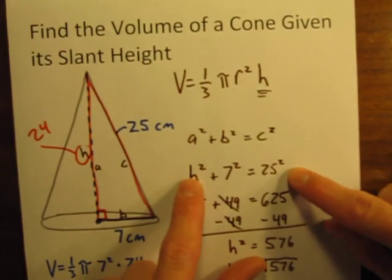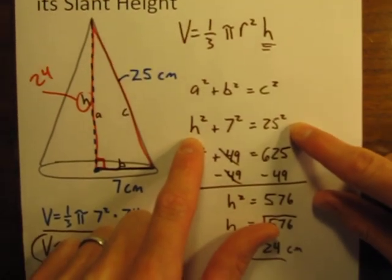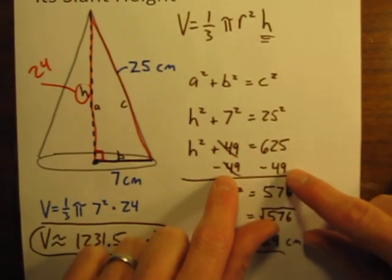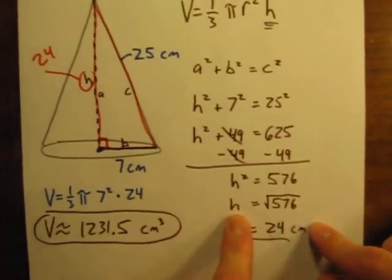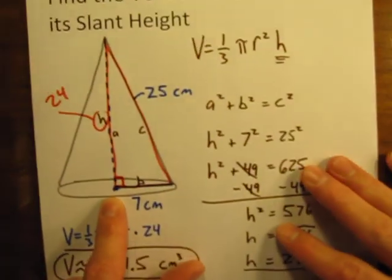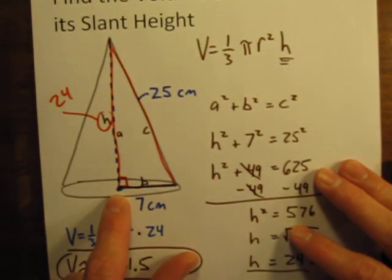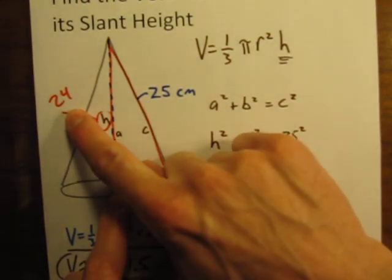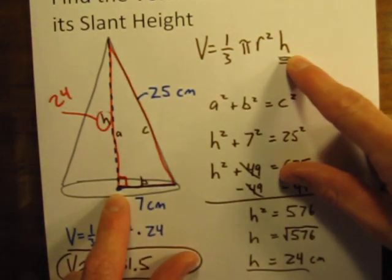So we plugged in our numbers into the Pythagorean theorem, squared them, subtracted them, and found that the actual height of the cone is 24 centimeters.